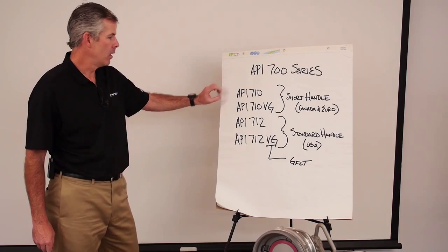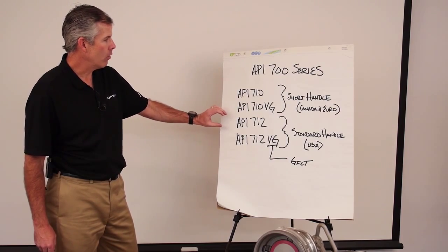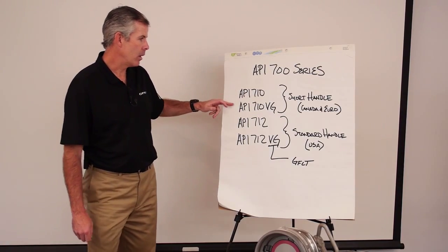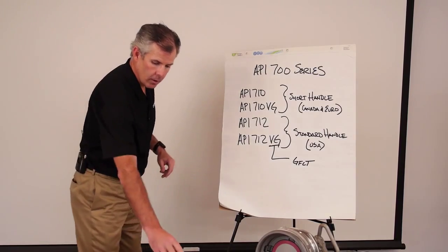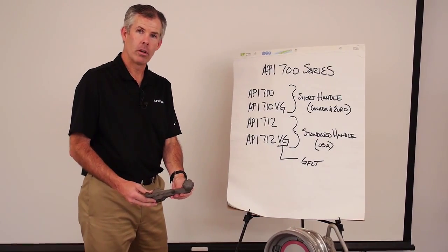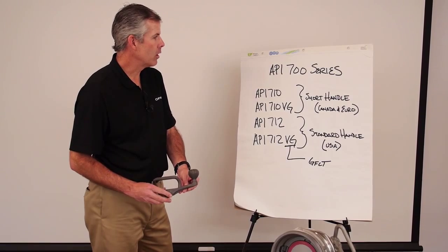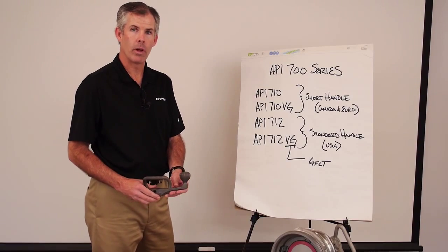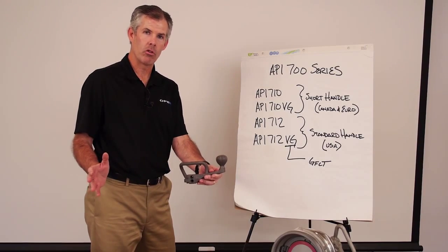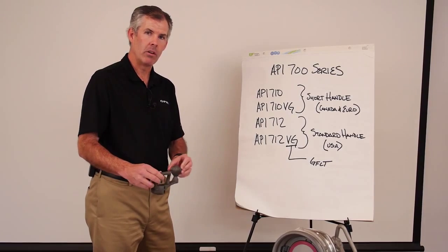The API 710 and the API 712. The 710 series is our short handle version, as you can see here. This is primarily used in Canada and Europe where they have smaller compartments in their trailers, so it makes it easier to operate.